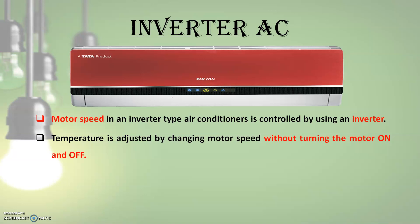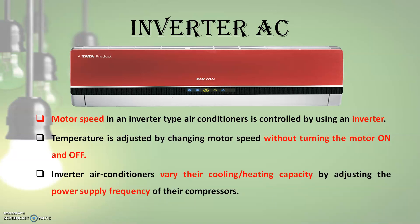An inverter type air conditioner varies its cooling and heating capacity by adjusting the power supply frequency of its compressor. The inverter does the function of varying the power supply frequency. It rotates the motor by switching the direction of electric current of the electromagnet, and the regulation of rotation speed is performed by controlling the switching speed.